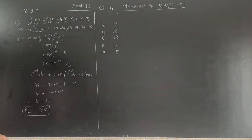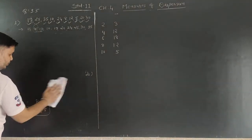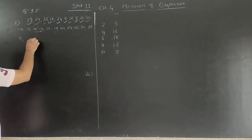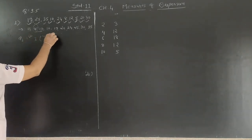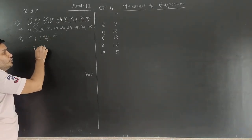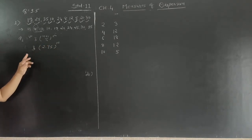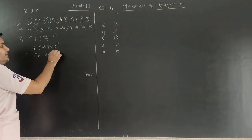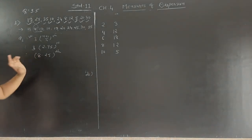Now to find Q3. Q3 is equal to the value of 3×(n+1)/4 th observation. We already found that (n+1)/4 = 2.75, so 3 × 2.75 = 8.25th observation.